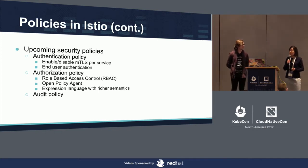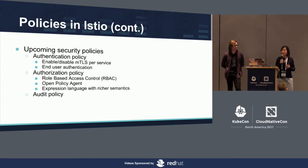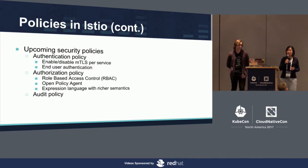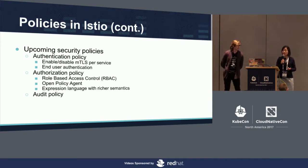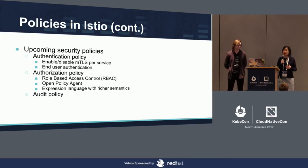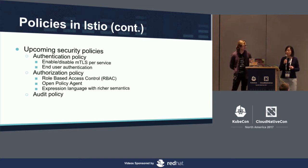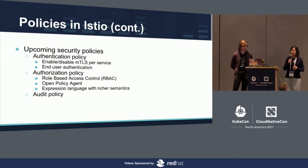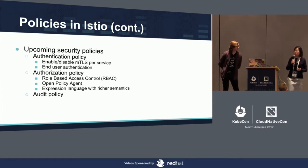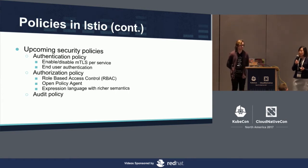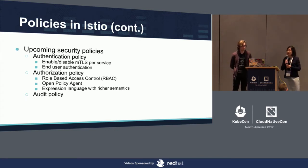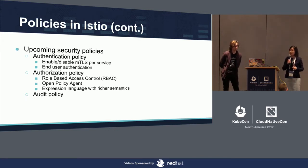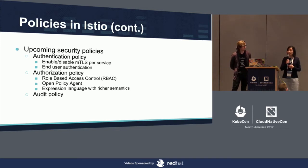The upcoming authentication policy will allow you to enable or disable mutual TLS for each service and configure end-user authentication. On the authorization side, we are adding role-based access control, which provides namespace-level, service-level, and method-level access control for services in the E-Steel mesh. We are also integrating with the Open Policy Agent to address more complicated authorization use cases. And we are also working on improving the expression language to provide richer semantics.